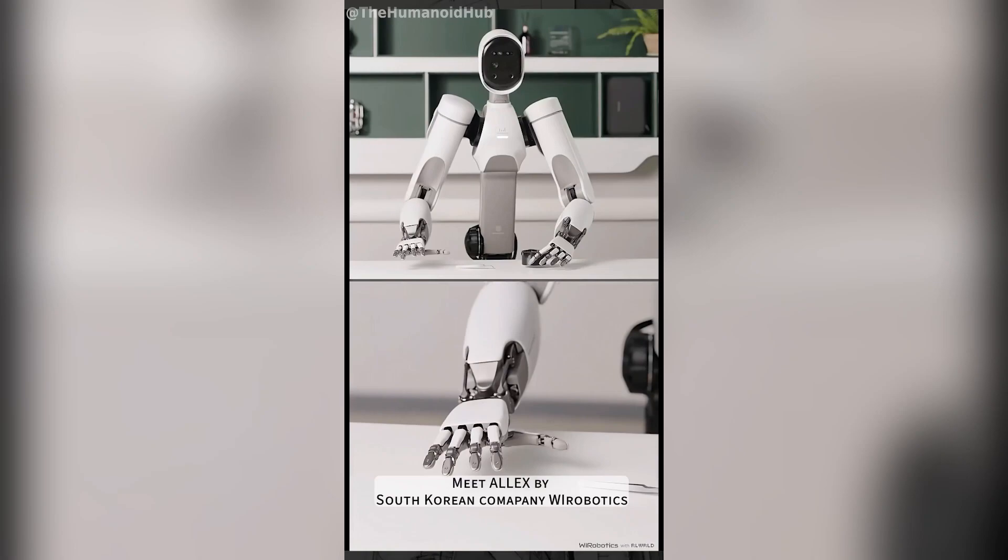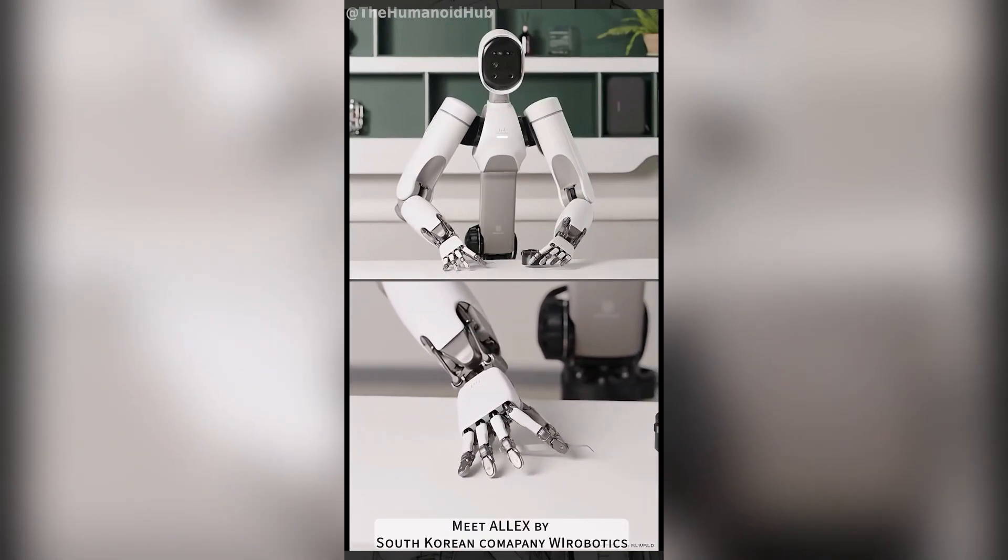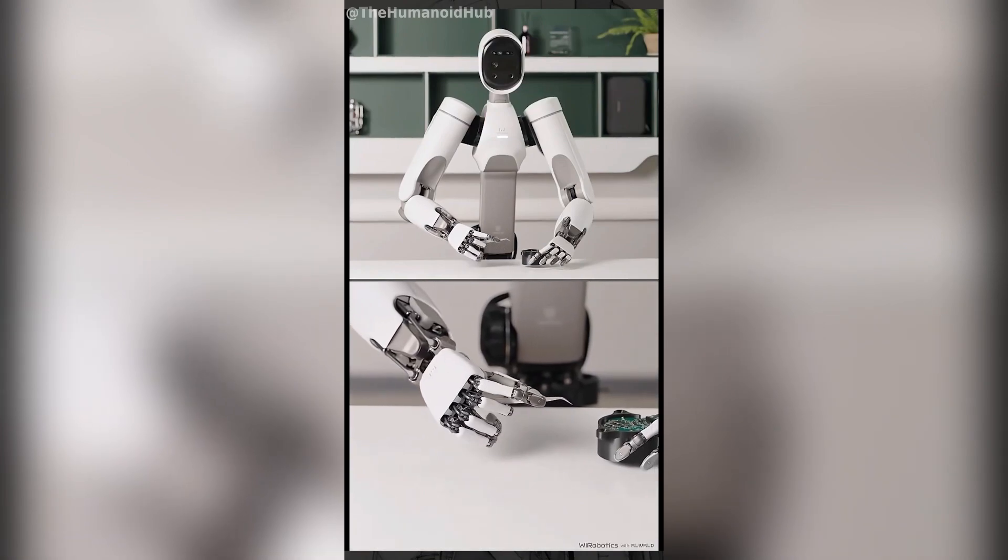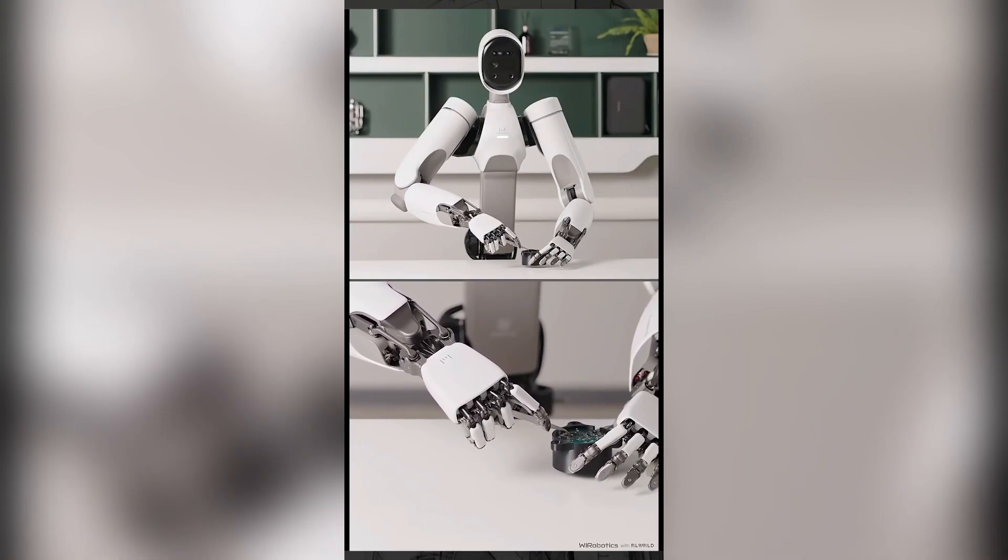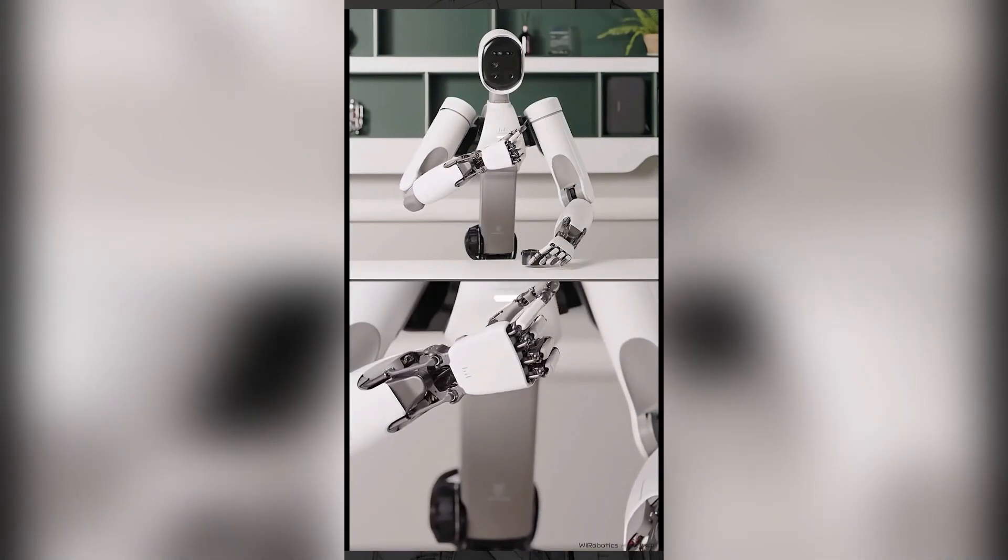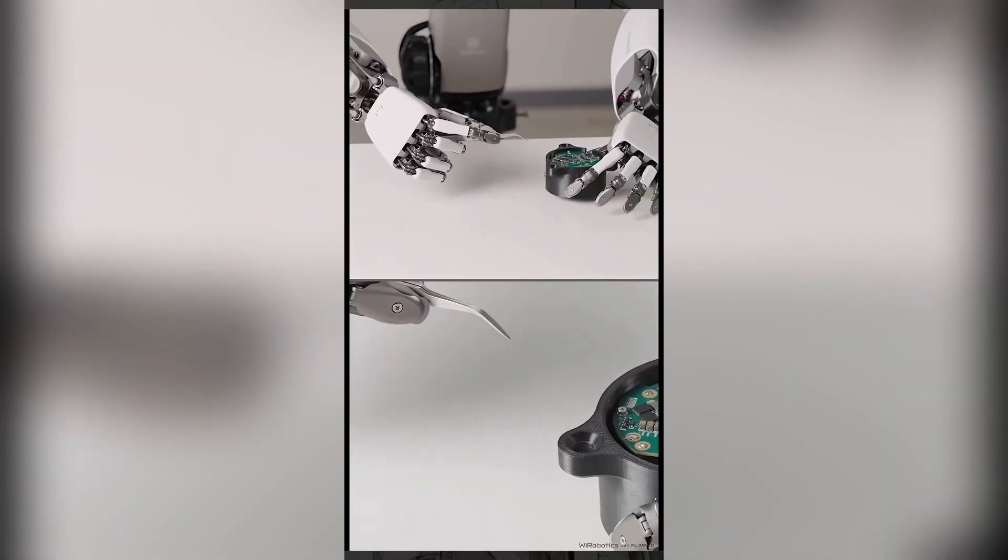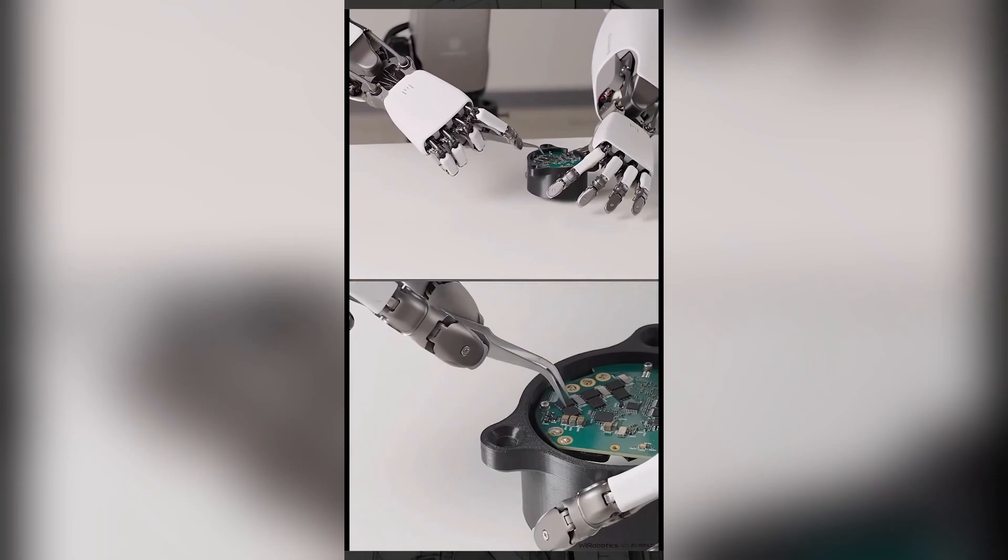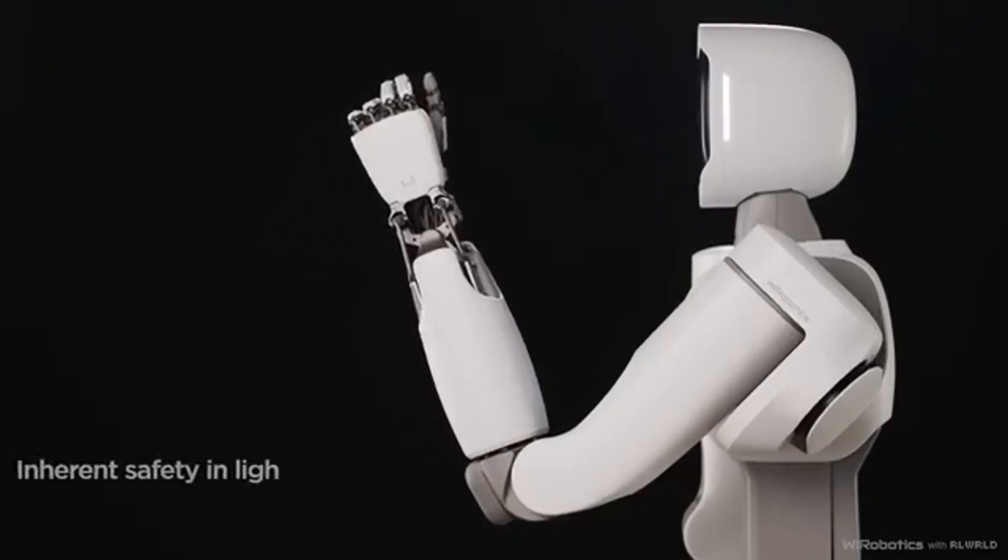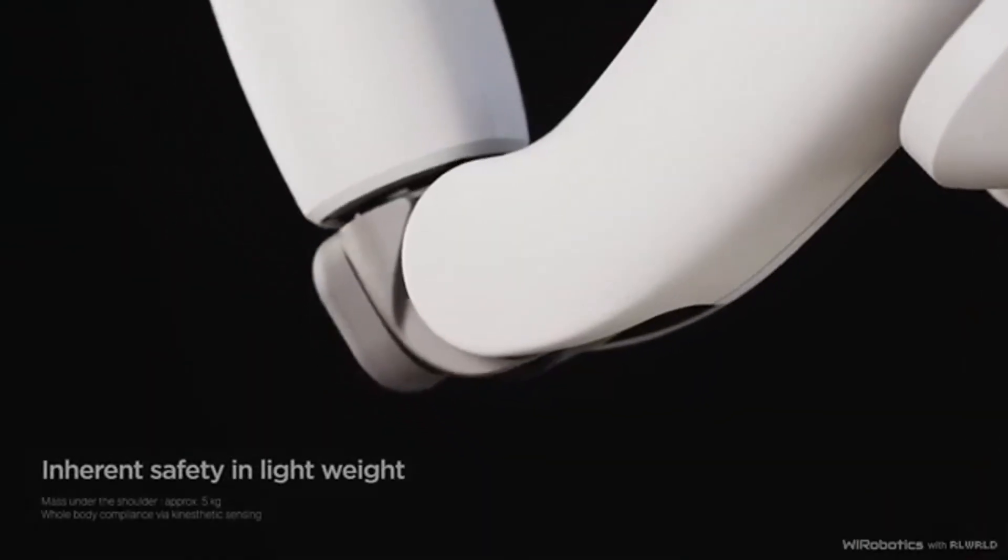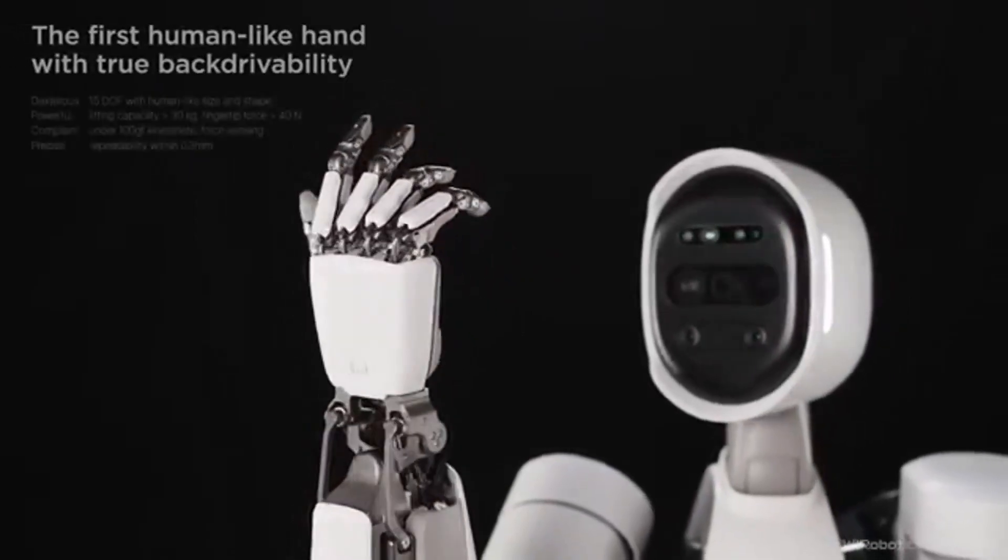But here's the kicker. WI Robotics didn't stop at just matching range of motion. They designed Alex's hands with ultra-sensitive sensors built directly into the fingertips and joints. That means when the robot grips an object, it's not just closing its fingers mechanically. It's actually feeling the pressure, adjusting in real time, and fine-tuning its grip the way a person would when holding a fragile egg or threading a needle. This ability, called tactile sensing, is one of the hardest things to replicate in robotics. And Alex seems to have nailed it.